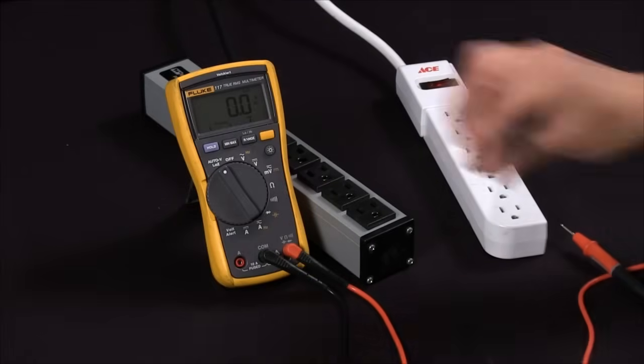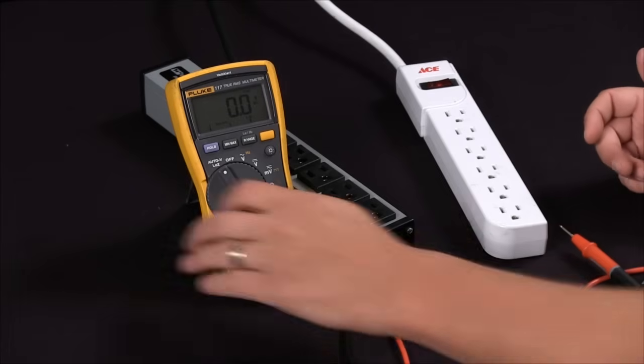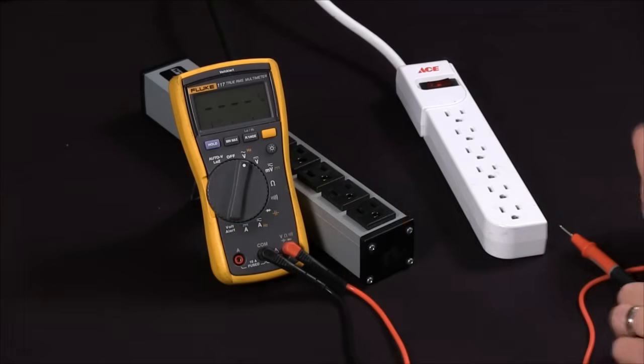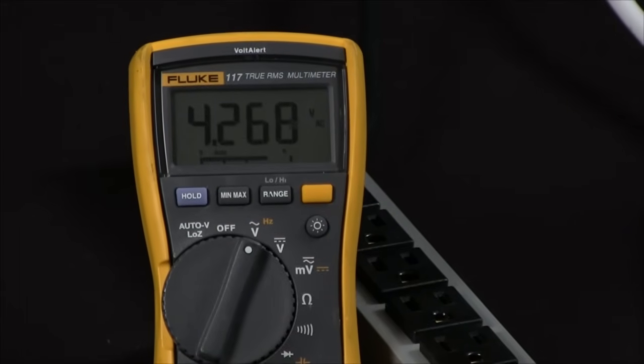In our second instance we're going to take a measurement with something that has an improper ground. We'll go back to our voltage setting, ground to hot, and you can see that I'm getting a low voltage reading.